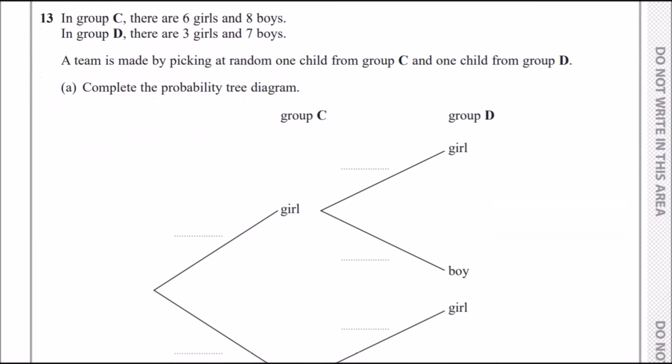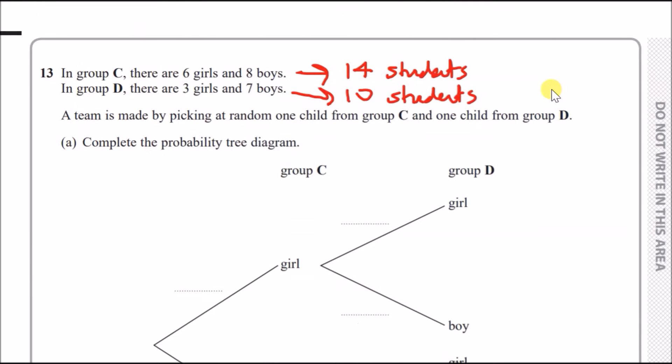Alright, problem 13. So three diagrams now. It says in group C, there are six girls and eight boys. And in group D, there are three girls and seven boys. A team is made by picking at random one child from group C and one child from group D. So just to help, let's make a total number of both here. If you've got six girls and eight boys, then you've got 14 students in that class. Whereas in group D, you've got three and seven, so 10 students. It's always good to total these up because we're using probabilities here.